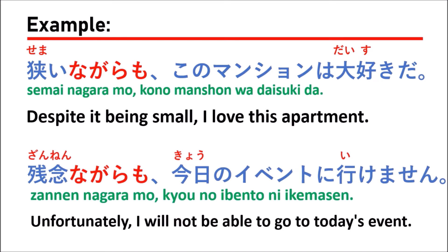In the second sentence, we use zannen nagaramo. Zannen is a noun meaning 'unfortunate.' When you use a noun with nagaramo, nothing changes — you use it in that form. So zannen nagaramo followed by kyou no ibento ni ikemasen means 'unfortunately, I will not be able to go to today's event.'